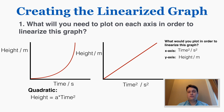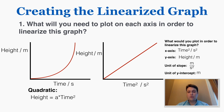The units of slope for this graph, as usual, are going to be the y units over the x units because slope is rise over run. For this linearized graph, the y units are meters and the x units are seconds squared, so the units of slope are meters per second squared. The unit of the y-intercept is still just the unit of the y-axis, which in this case is just meters.